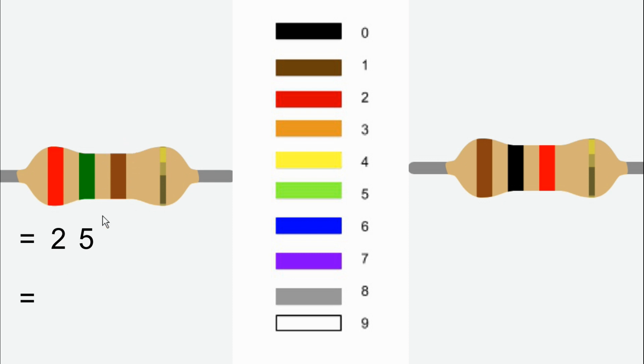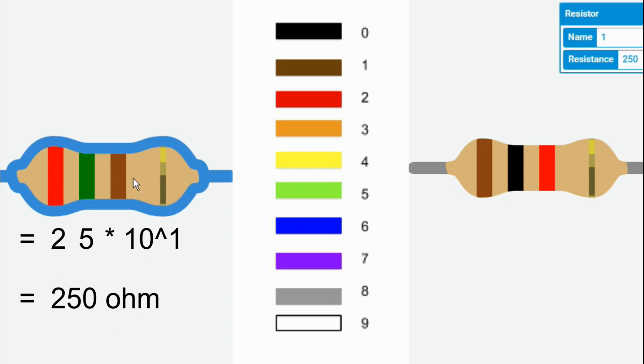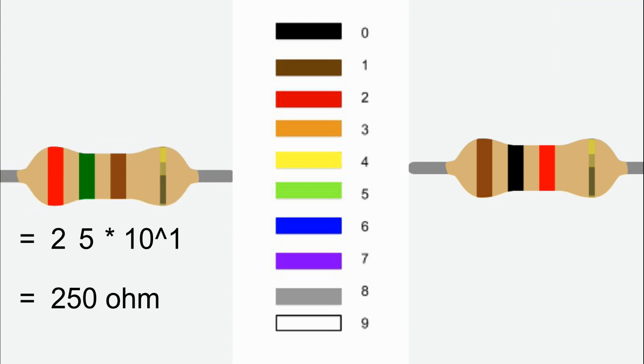Third one is the multiplier band. So the color is brown which is 1, so it's 10 power 1. So 25 into 10 power 1, the answer is 250. The total resistance value is 250 ohms. So this is correct.